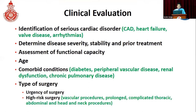Assessment of functional capacity is very important. We also consider age of the patient, comorbid conditions such as diabetes, peripheral vascular disease, renal dysfunction and pulmonary disease, and the type of surgery — especially the urgency, whether it is urgent or elective — and the risk of surgery, such as high-risk surgeries like valvular procedures, prolonged thoracic or abdominal surgeries, and head and neck surgeries.